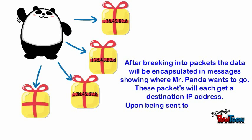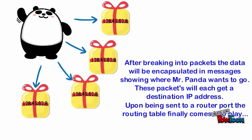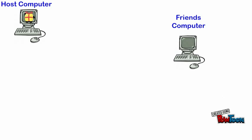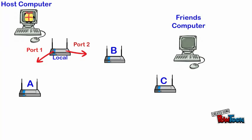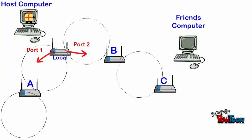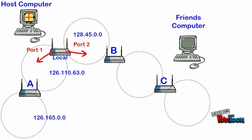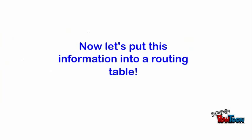Upon being sent to the router port, the routing table finally comes into play. Here's your host computer with Mr. Panda — he needs to get to your friend's computer way over there. To do so, he first stops at your local router and can either leave from port 1 or 2 to routers A, B, or C. Each router is attached to multiple local area networks, each with its own IP address. We want Mr. Panda to get to the network closest to your friend's computer.